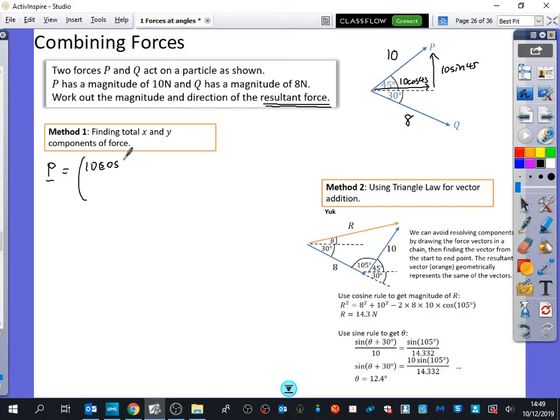Root 2 over 2. Okay, yeah, so that would be root 2 over 2 because that would be 10 cos 45 and 10 sine 45. I'm just going to write it like this now. It's going to be 10. 10 cos 45 and 10 sine 45. What is 10 cos 45? So, that's what P is. And they're both positive because it's going to the right and it's going up.